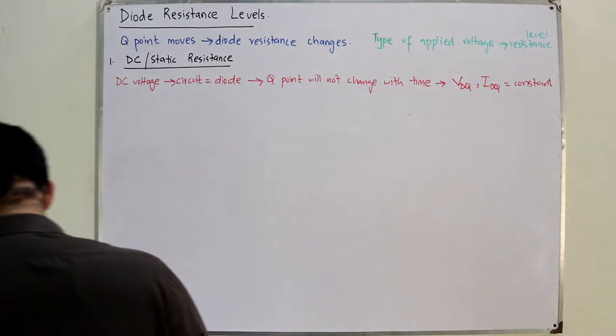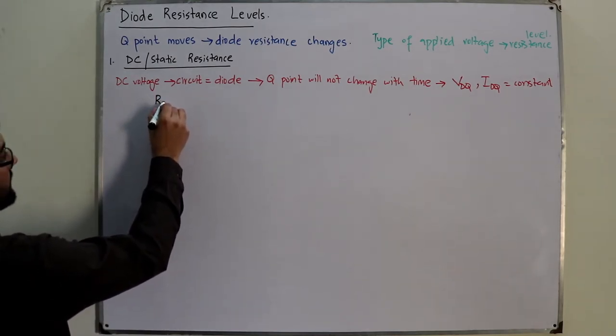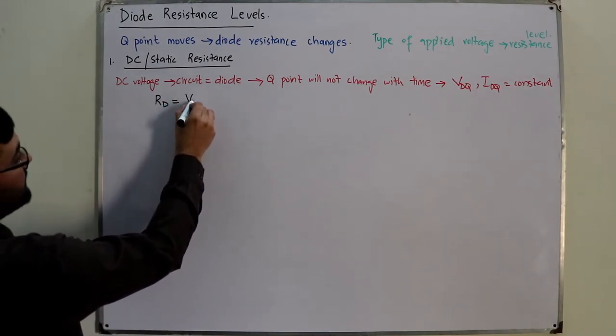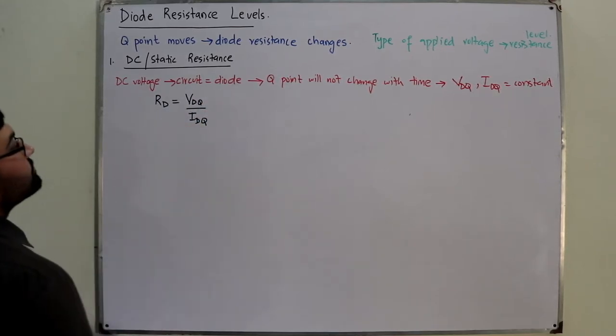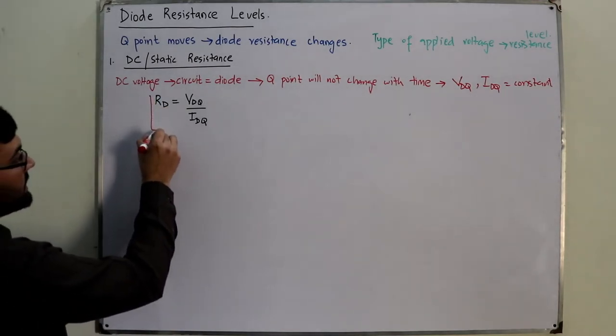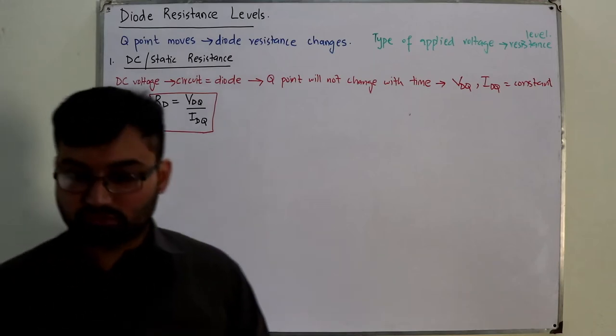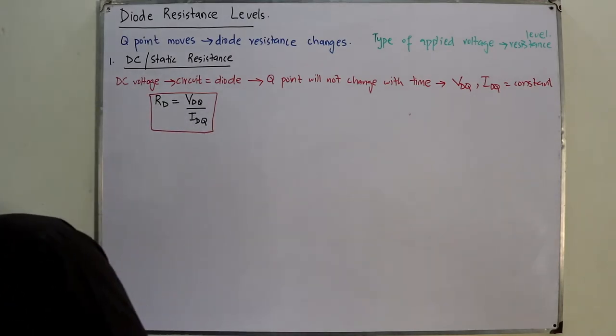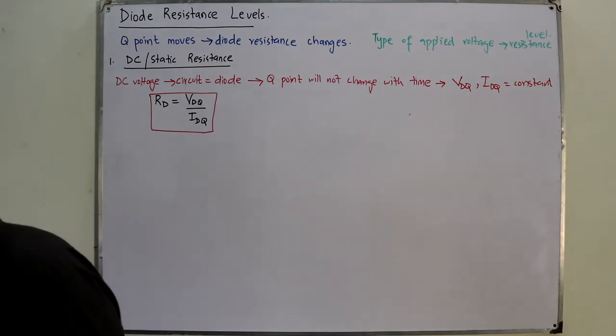The Q-point will not change because the coordinates VdQ and IdQ, they will not change, they are constant. So the resistance of the diode Rd you can simply calculate by dividing VdQ by IdQ. You don't need to write the Q - it doesn't matter, you could take it at any point, but we generally take it at the Q-point.